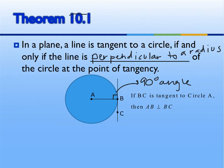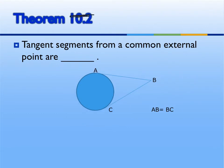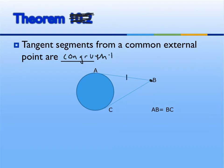Our second theorem: tangent segments from a common external point are congruent. So we have our tangent segment AB and our tangent segment CB. Since they share this common point, AB is congruent to BC.